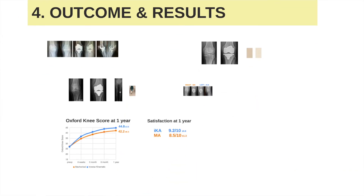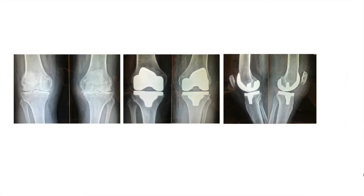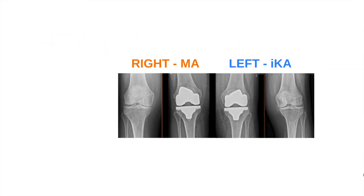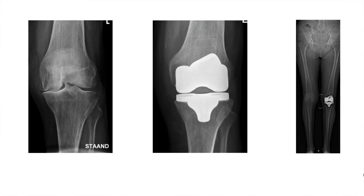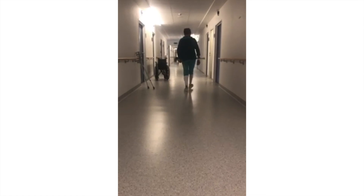When restoring the tibial anatomy, X-rays show a nice, physiological, slightly oblique joint line. In a bilateral TKA case, a mechanically aligned TKA on the right side and an inverse kinematically aligned TKA on the left side — you notice quite the difference in joint line obliquity. This patient has a postoperative overall alignment of 3 degrees varus with the native MPTA restored at 86 degrees, nicely parallel to the floor. All patients are advised to walk immediately with full weight bearing, here at 24 hours after surgery.